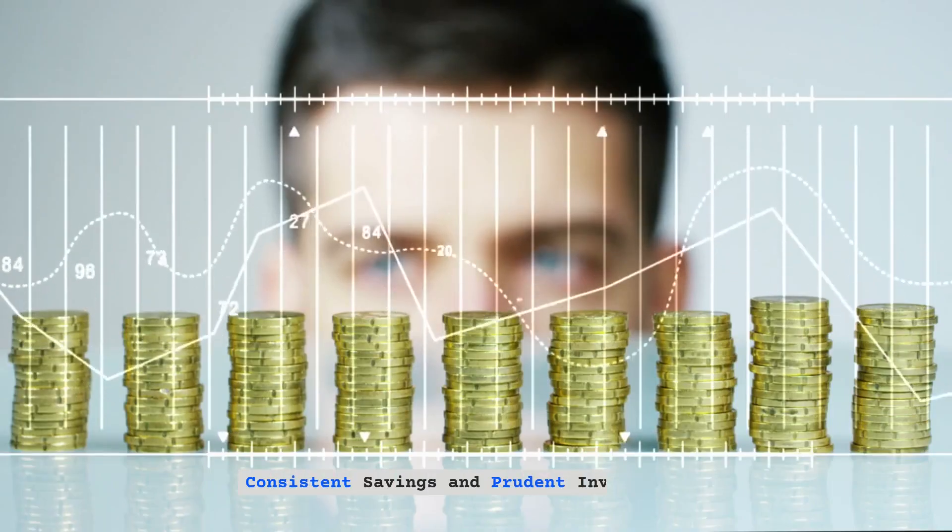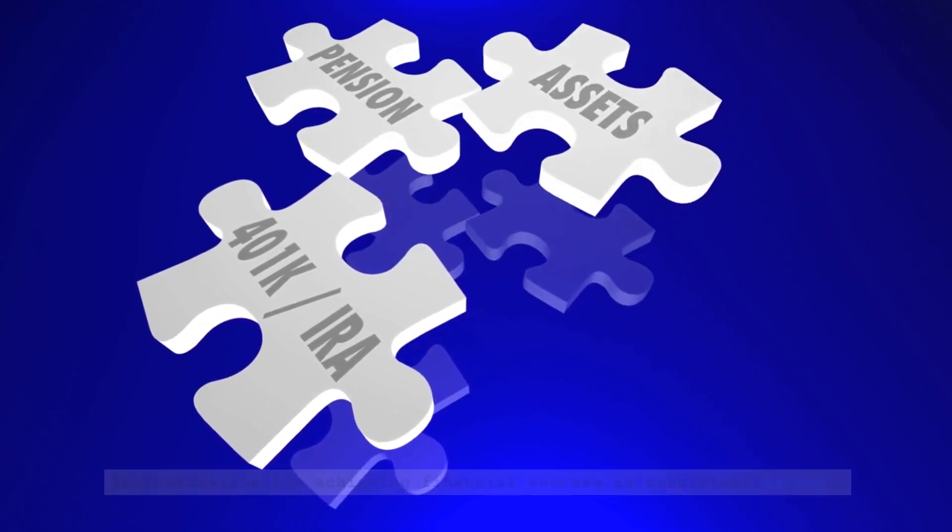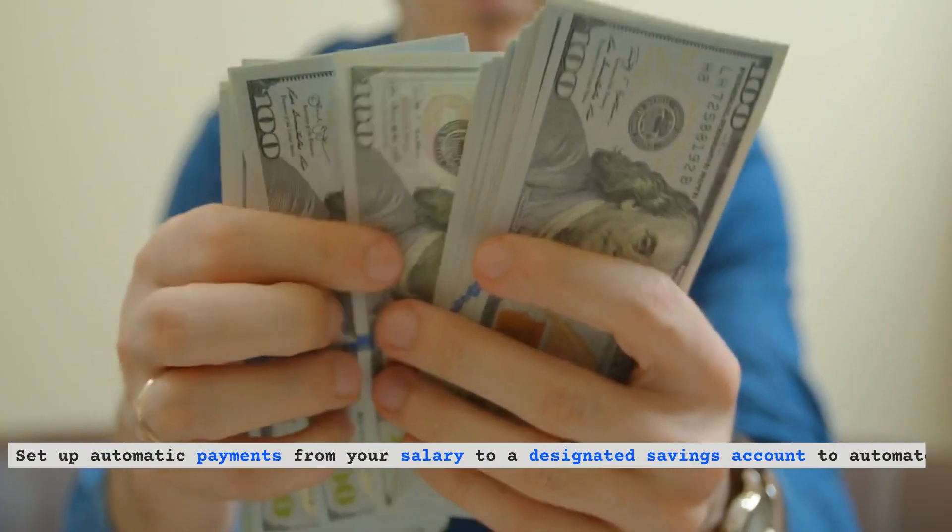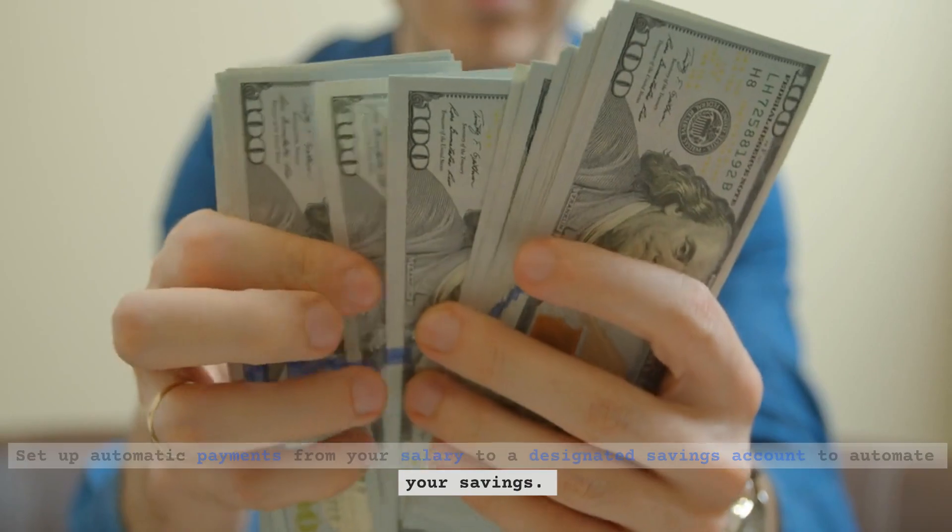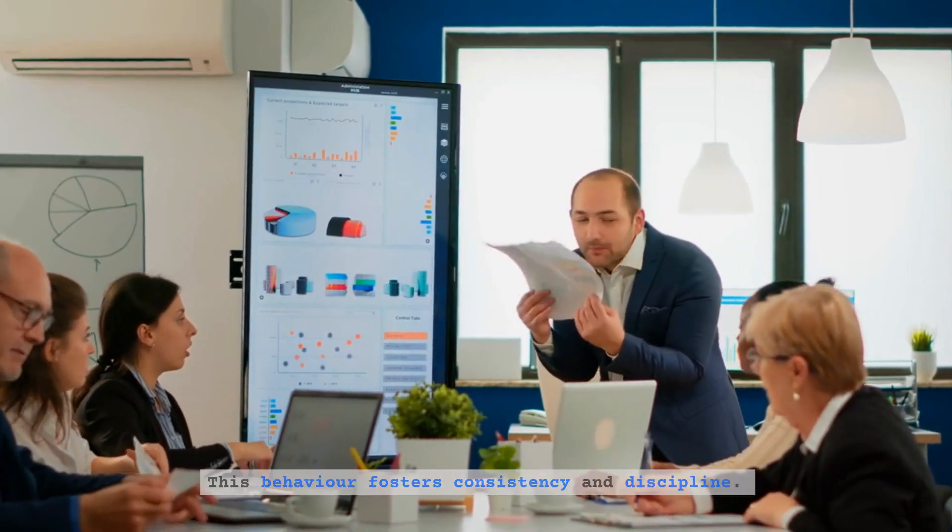Consistent savings and prudent investments. The foundation for achieving financial success is consistent saving. Set up automatic payments from your salary to a designated savings account to automate your savings. This behavior fosters consistency and discipline.